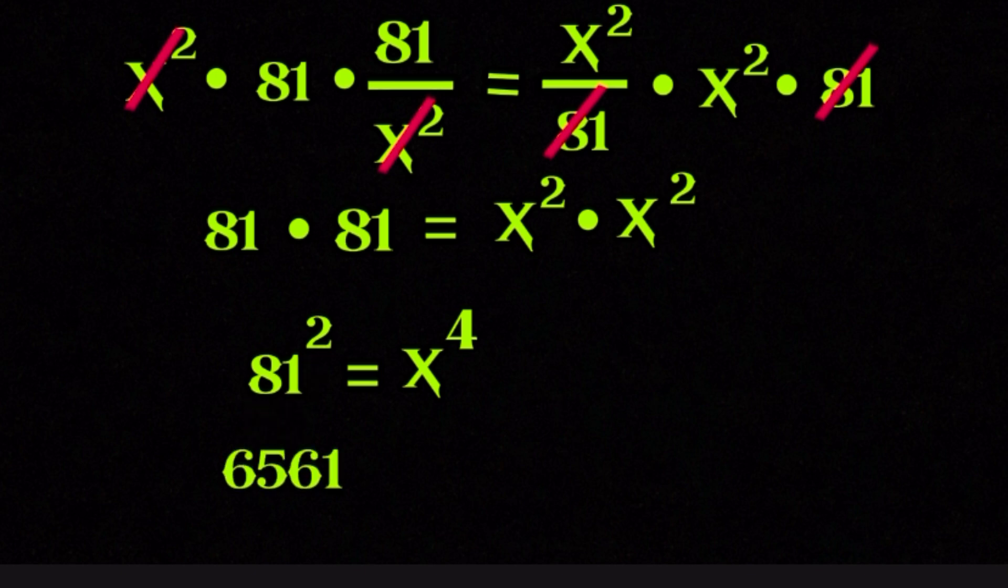81 squared is 6561, but we don't even need the decimal value yet, because 81 itself is already a perfect square. 81 is 9 squared. So 81 squared is actually 9 to the power of 4. That means our equation becomes 9 to the power of 4 equals x to the power of 4.